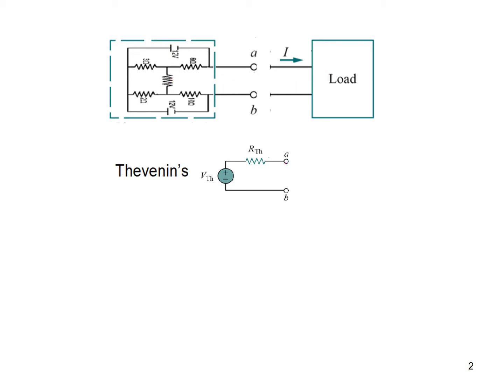Mr. Thevenin suggested that instead of doing this lengthy process, if you can calculate the voltage and the resistance at this point, then we can have a circuit like this. We write this as V-Thevenin voltage and the resistance R-Thevenin, and then we can connect the load to find the load current and voltage.